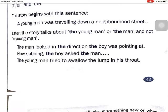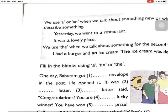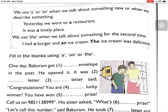'The man looked in the direction the boy was pointing.' Now you can see: 'the boy asked the man,' 'the young man tried to swallow' — 'a' is not used there the second time. We use A or AN when we talk about something new, or when we introduce something for the first time.